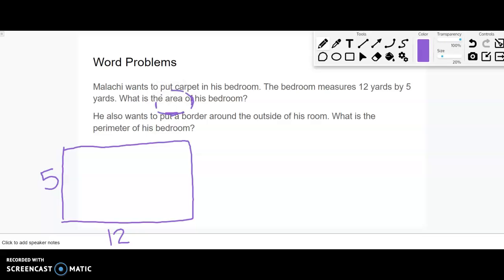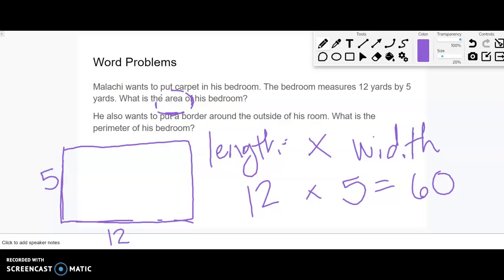So what is the area of it? Well, if you remember back to last lesson, we find the area of a rectangle by doing the length times width. So we have the length is 12, the width is 5, so we can do 12 times 5. You can use a calculator - gives us 60 square yards.